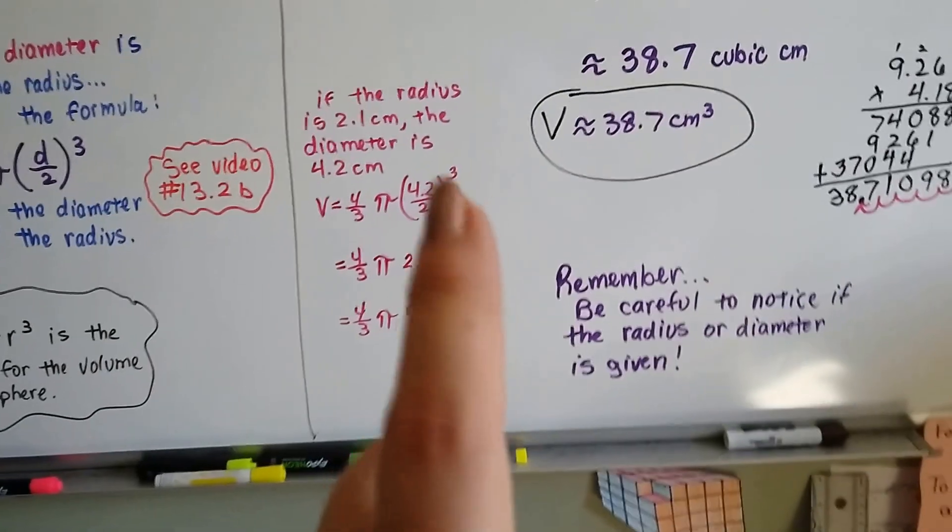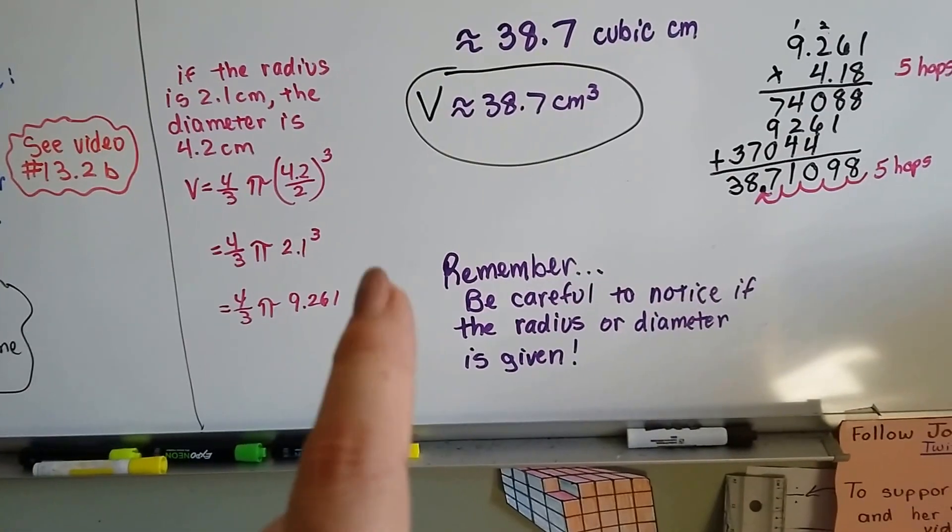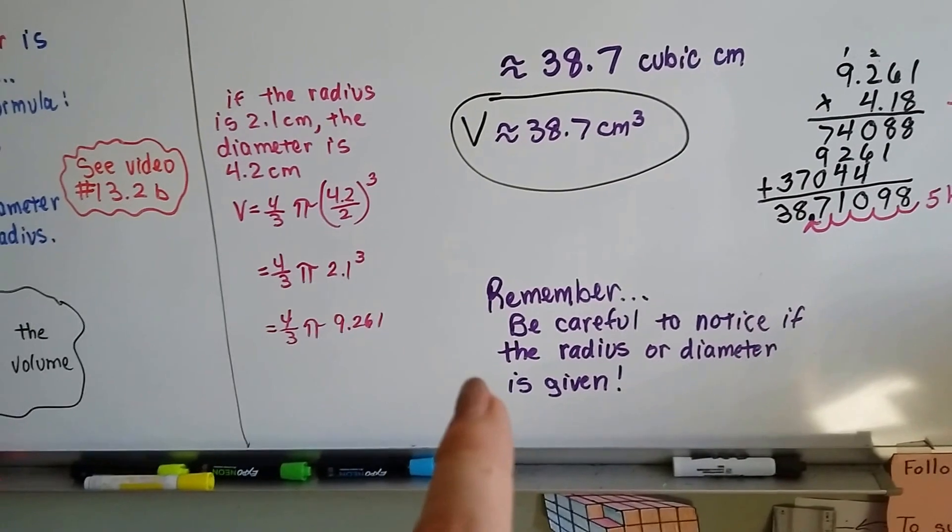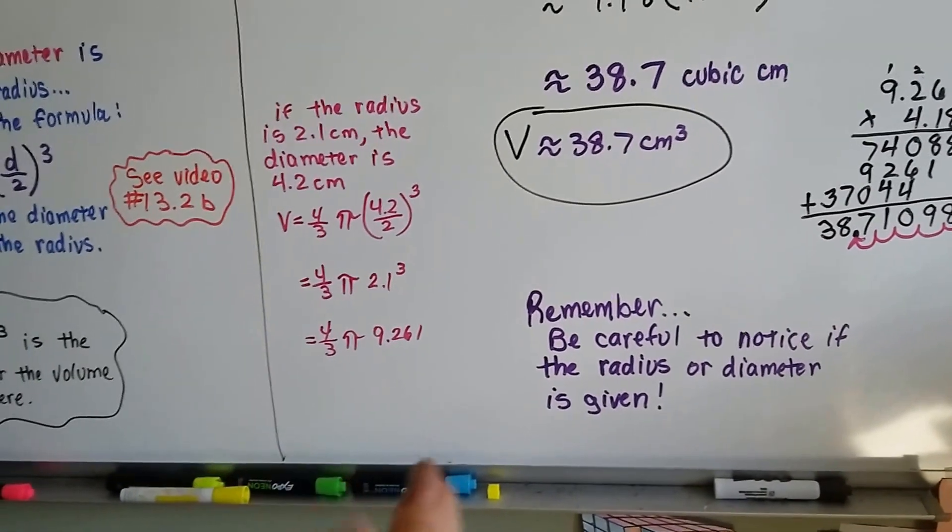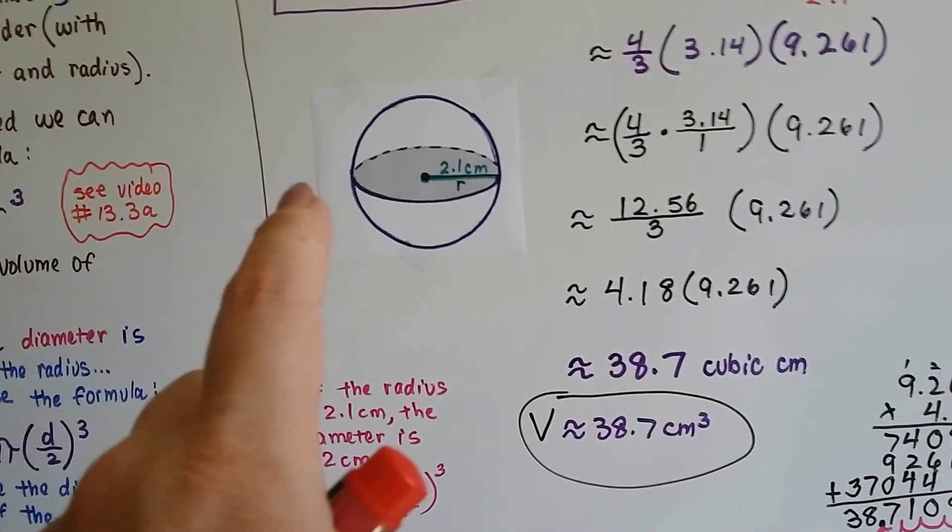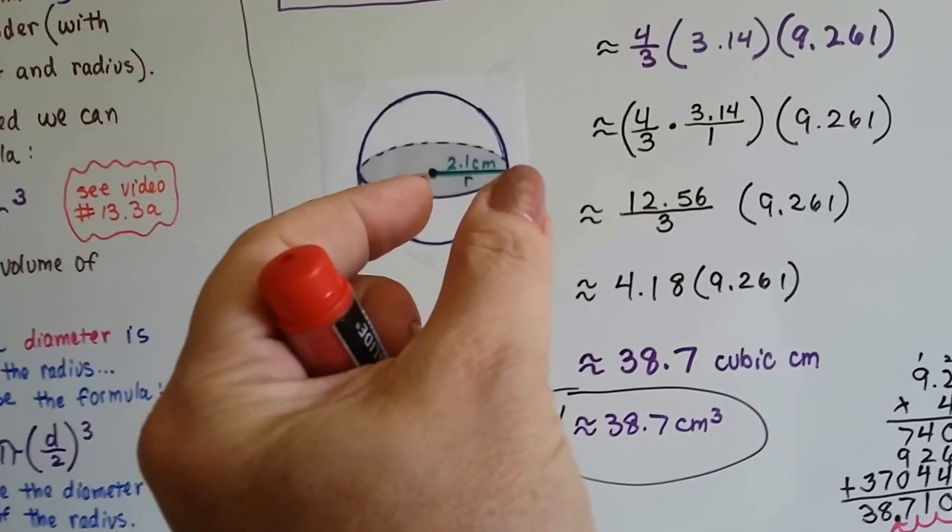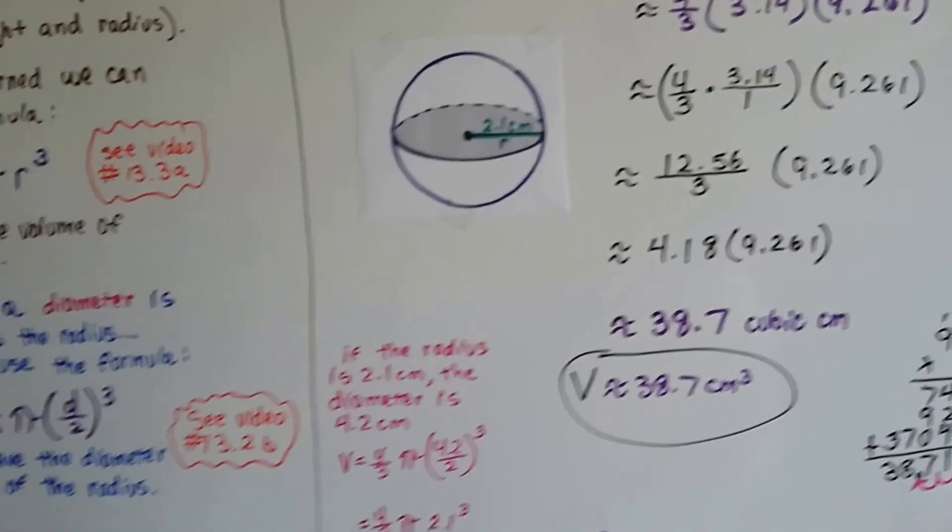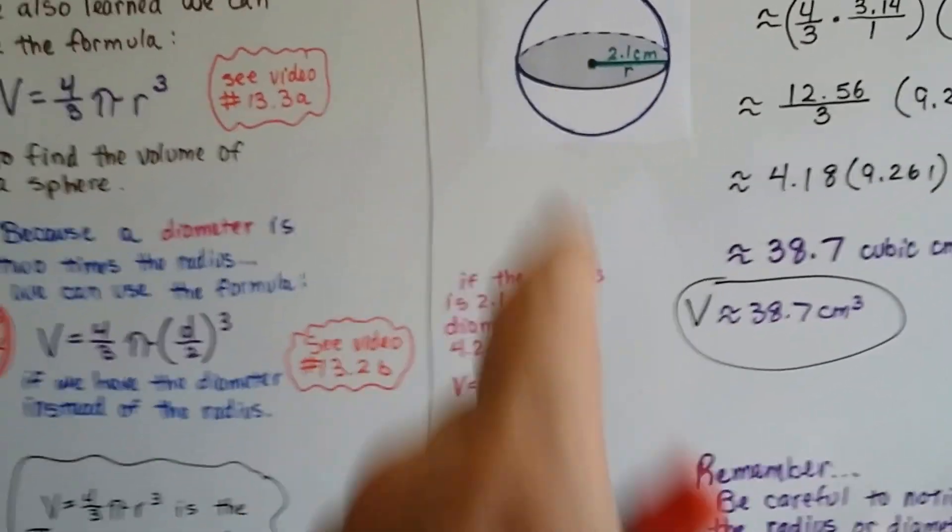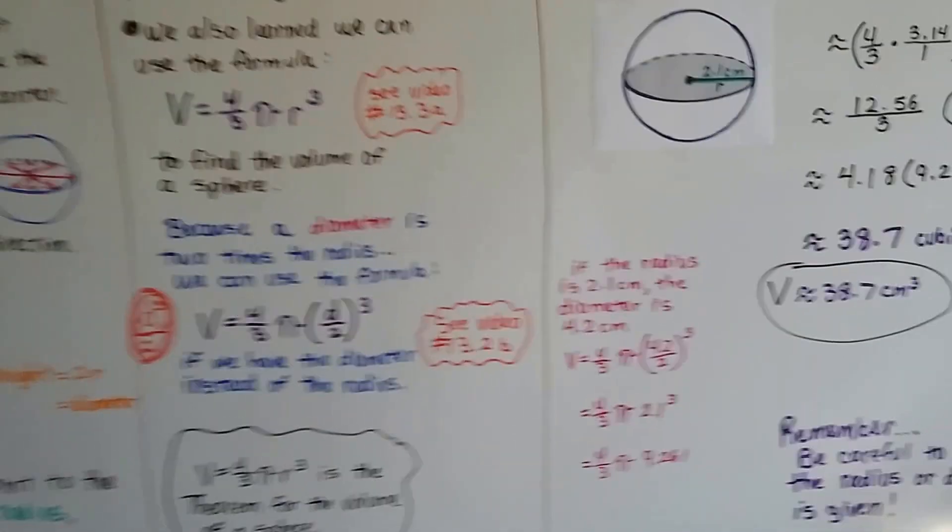Now, be really careful. I want you to remember this. Be careful to notice if you're given the radius or the diameter. It makes a huge difference. Is it giving you the whole thing or just half of it? If it's half, it's the radius. If it's the whole thing, it's the diameter, and we need to write the equation that way.